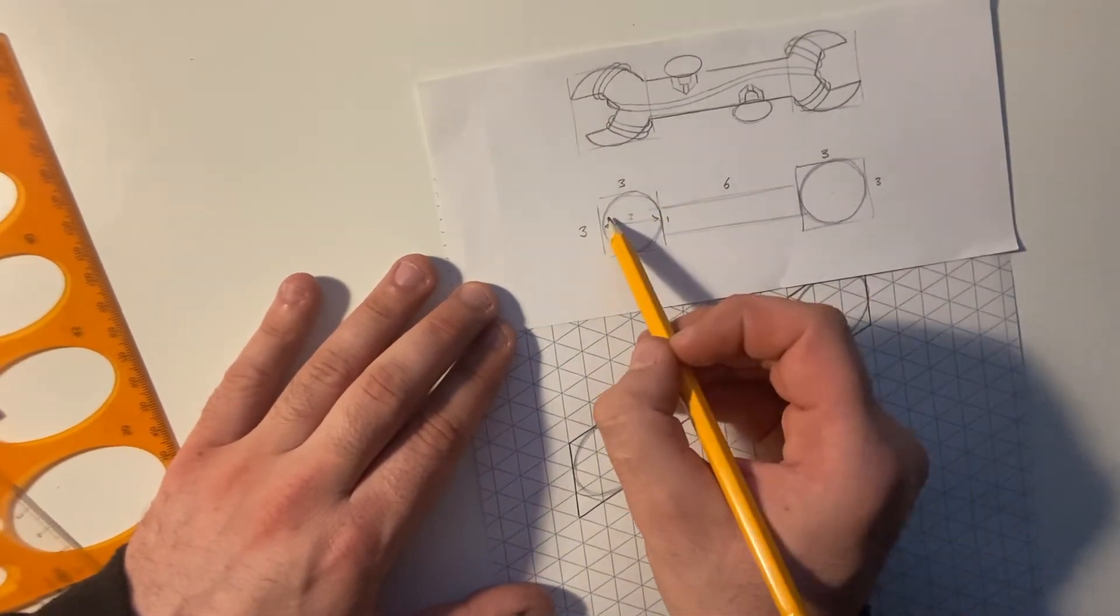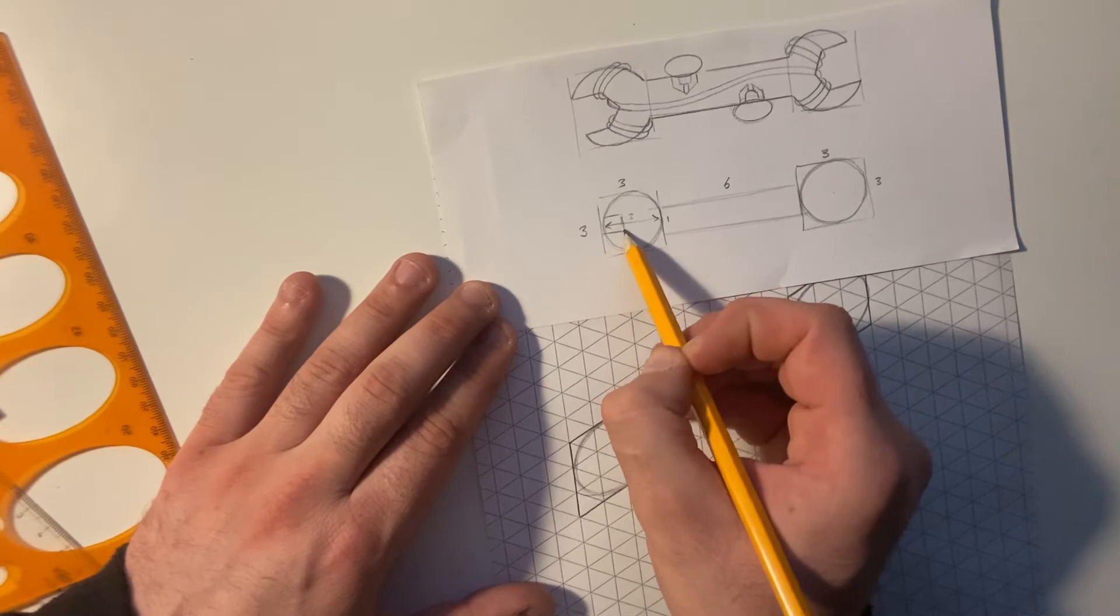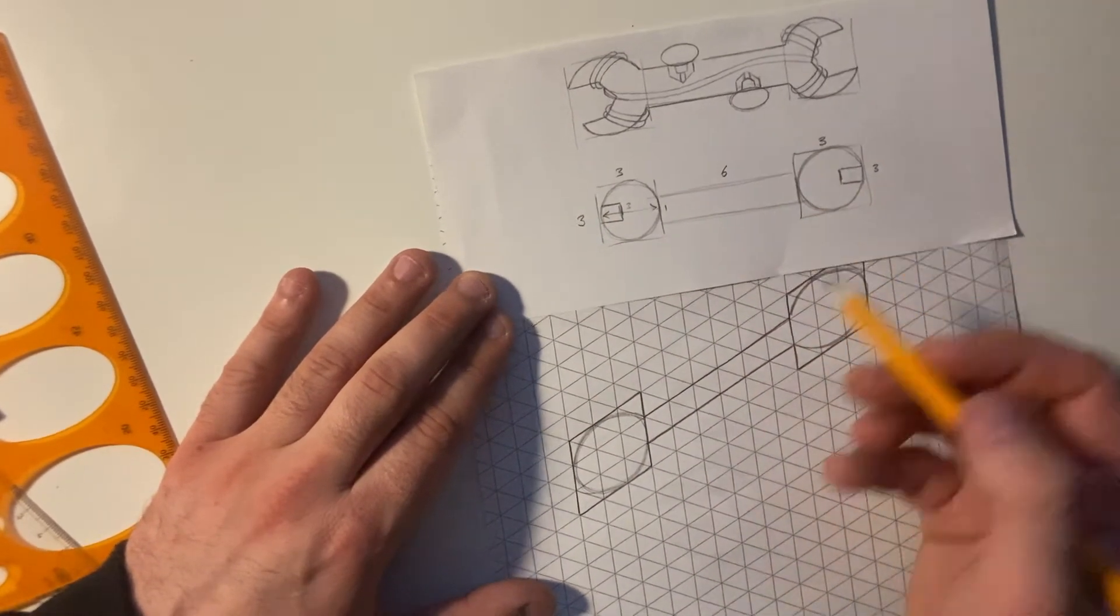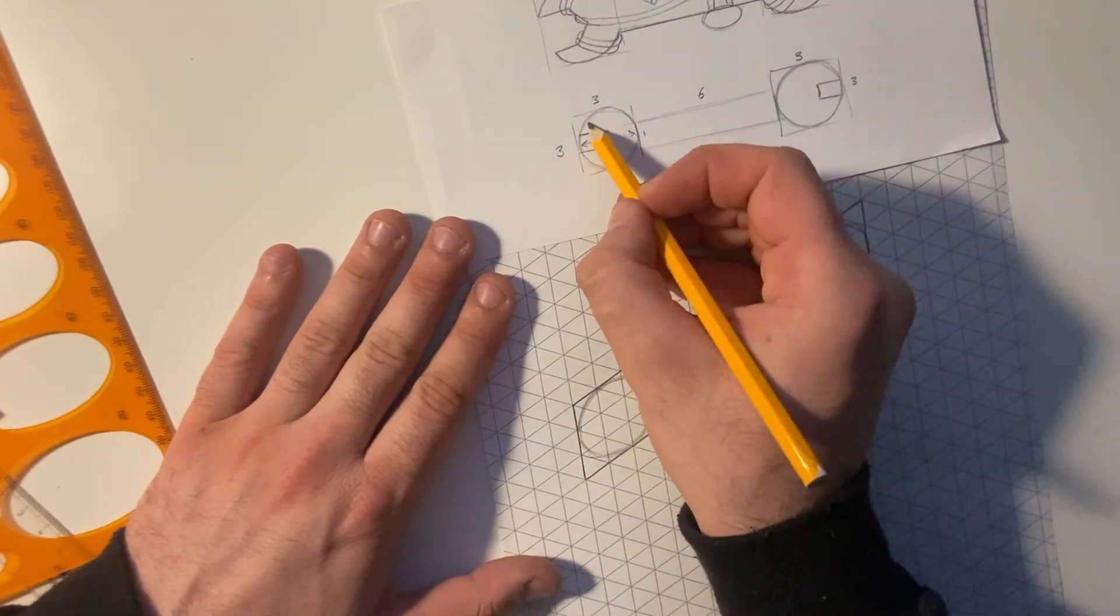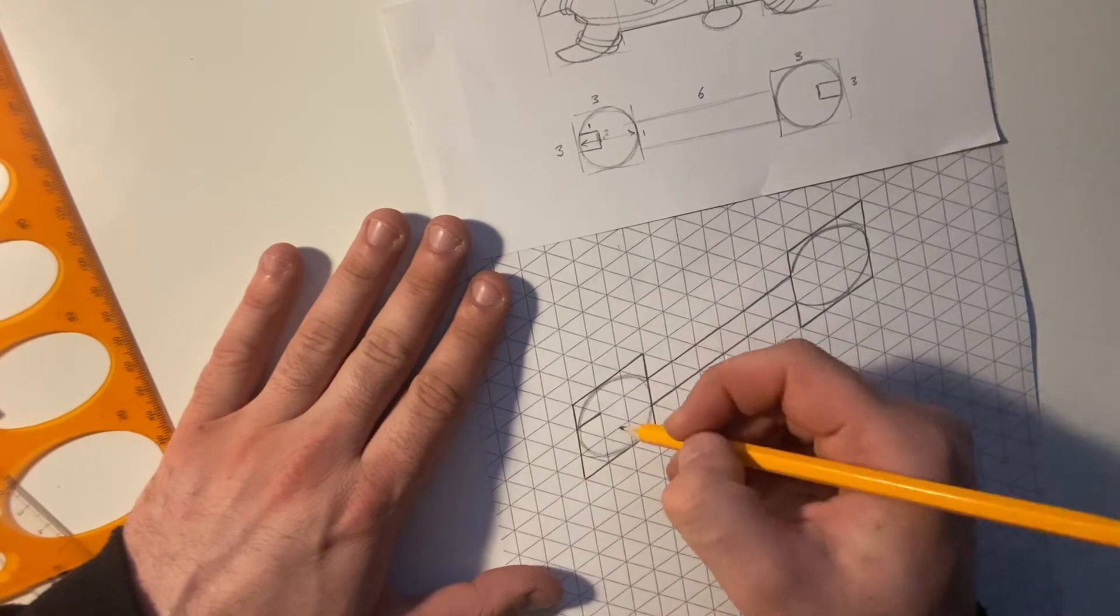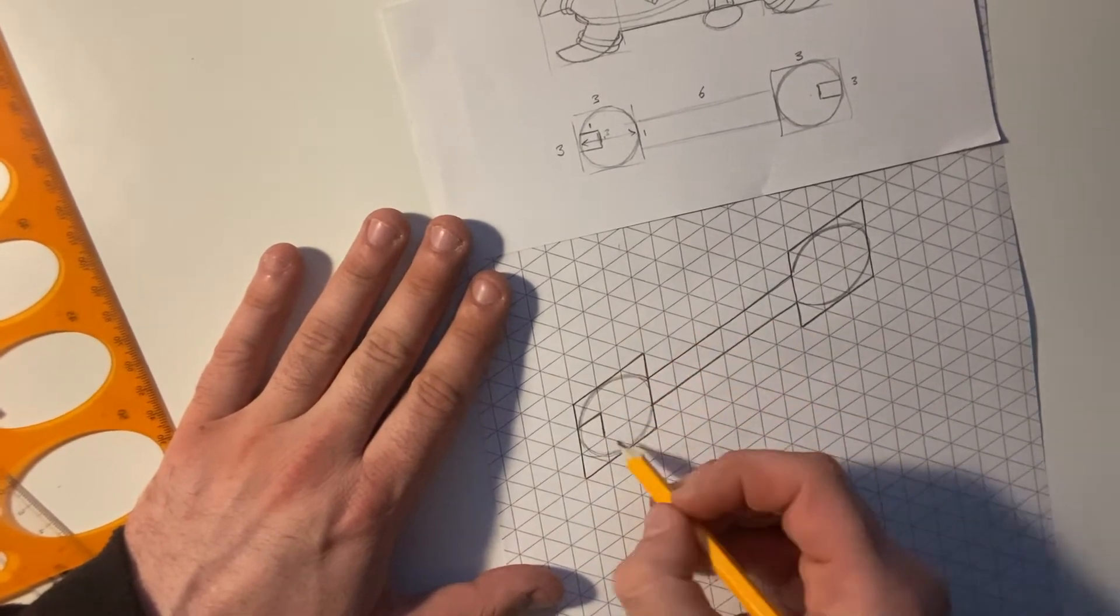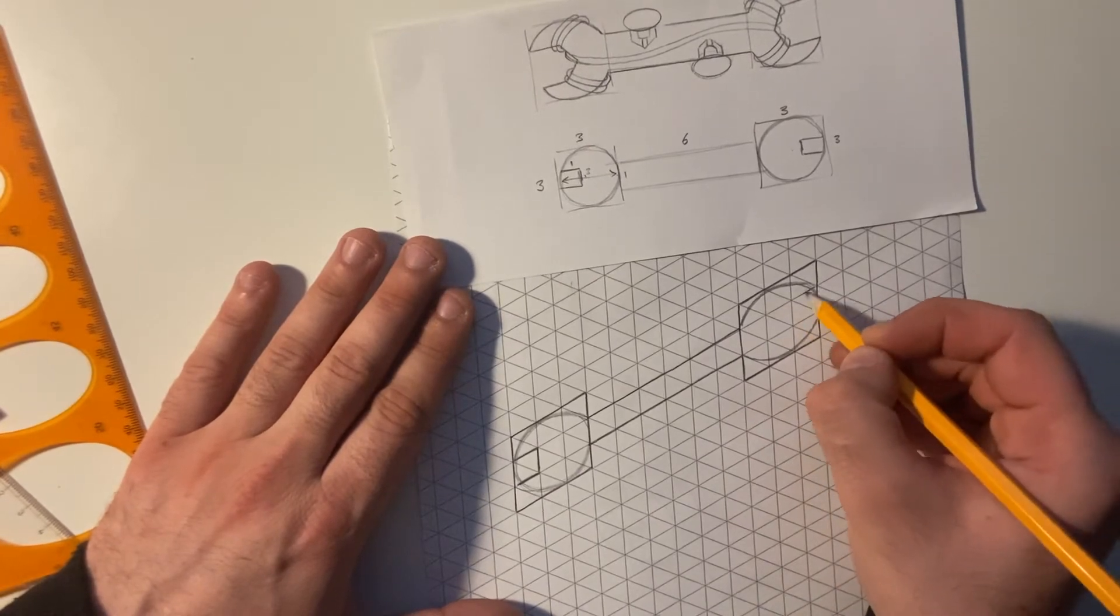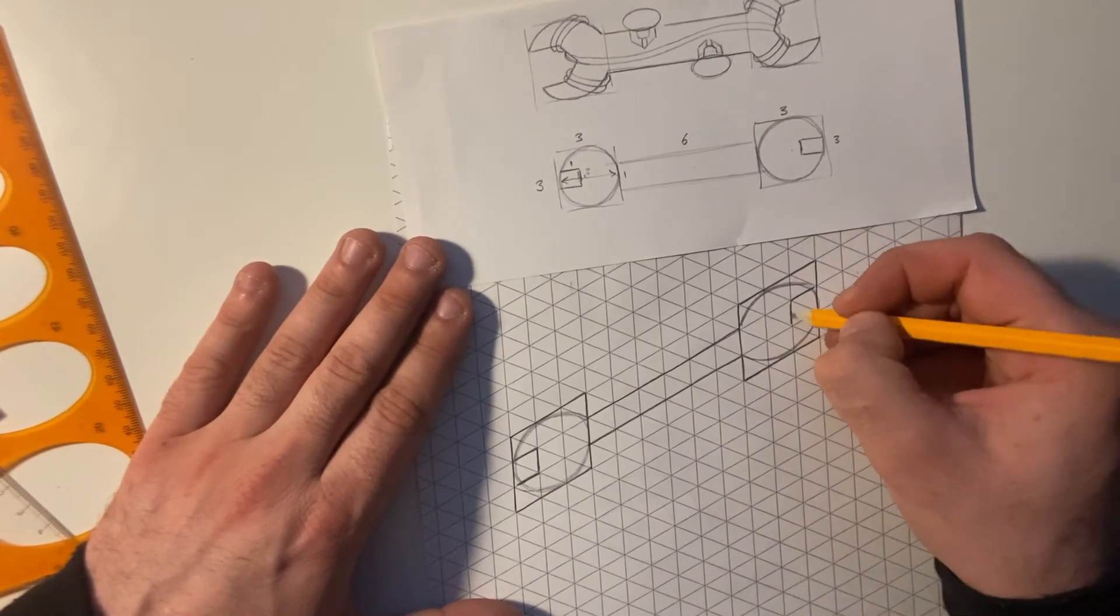I can then think about the indentations of the spanner head. Like so. And I'm going to make those again 1 by 1. So I'm just coming in from this end, 1 in, by 1, by 1. The same on the opposite end, coming in from that middle section, 1 by 1.